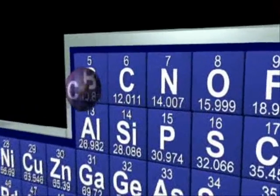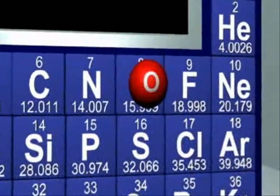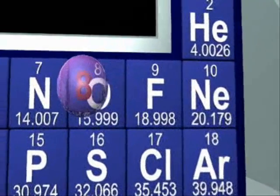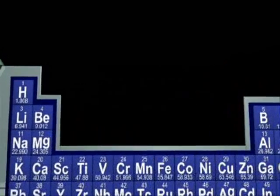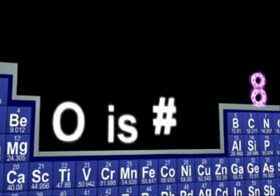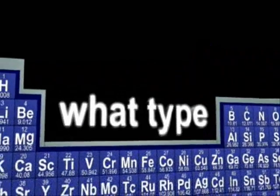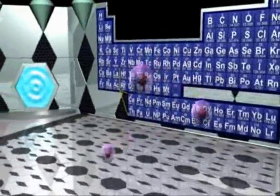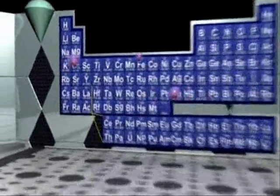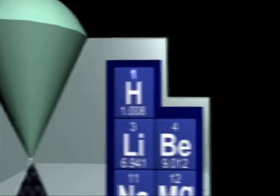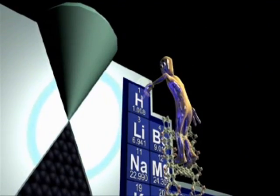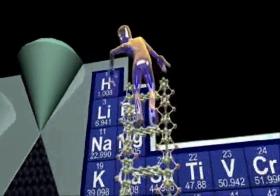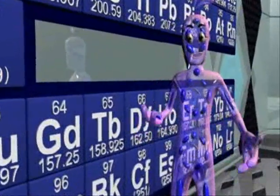What type of atom an atom is depends on the number of protons. So that's what this number one means — it stands for the number of protons in each element. And each element has a different number of protons. How amazing is that? Another question answered.